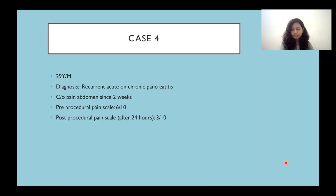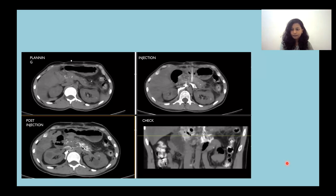Case 4 is a 29-year-old male with recurrent acute and chronic pancreatitis, who complained of abdominal pain for 2 weeks. Pre-procedural pain scale was 6 out of 10, and post-procedural was 3 out of 10. Images depict the planning, positioning of the needles, injection of the neurolytic agent, and post-injection appearance, also seen on coronal imaging.